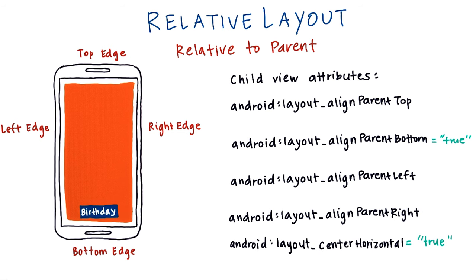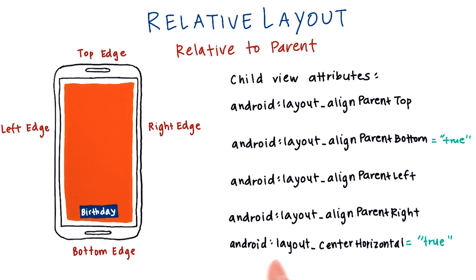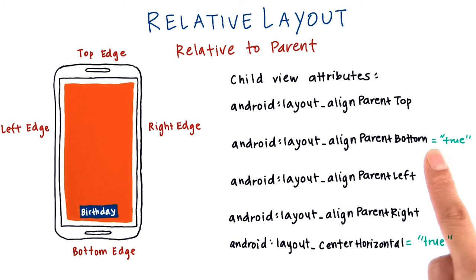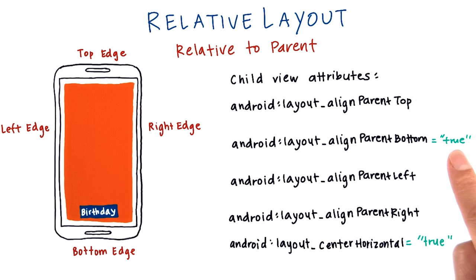Believe it or not, there are even more attributes you could set. You can also center the view horizontally by setting android:layout_centerHorizontal to be true. You can also combine it with the existing attributes we learned before. So if a view is aligned to the bottom and it's centered horizontally, it would look like this.